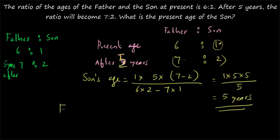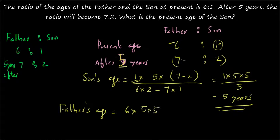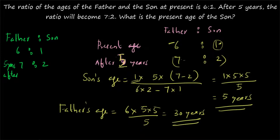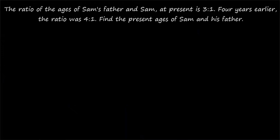Just for understanding, let us also find out the father's age. You just change the y value of 1 to x value of 6, and keep the rest the same. So father's age = 6 into 5 into 5, divided by 5 = 30 years. Finding out the father's age is much easier — you just replace the first value alone and the rest remains as such.